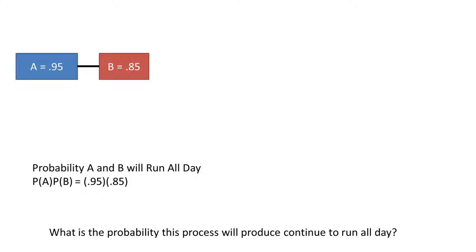The first set of process, A and B, must both run to keep the line running. So we can multiply these two processes' probability together to get the probability they will continue to run. Doing so, we get a probability of 0.8075, or 80.75%, chance the two machines will run.